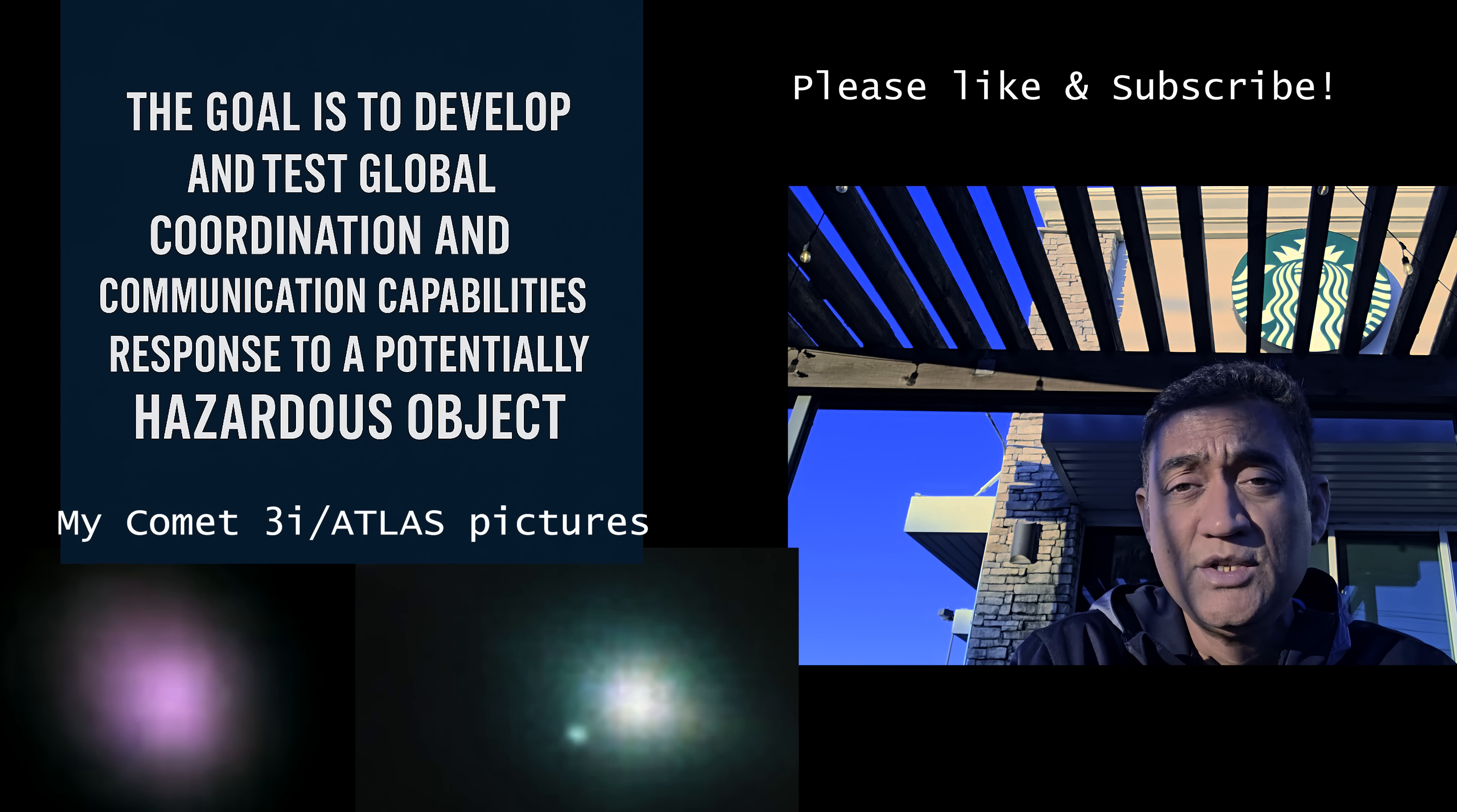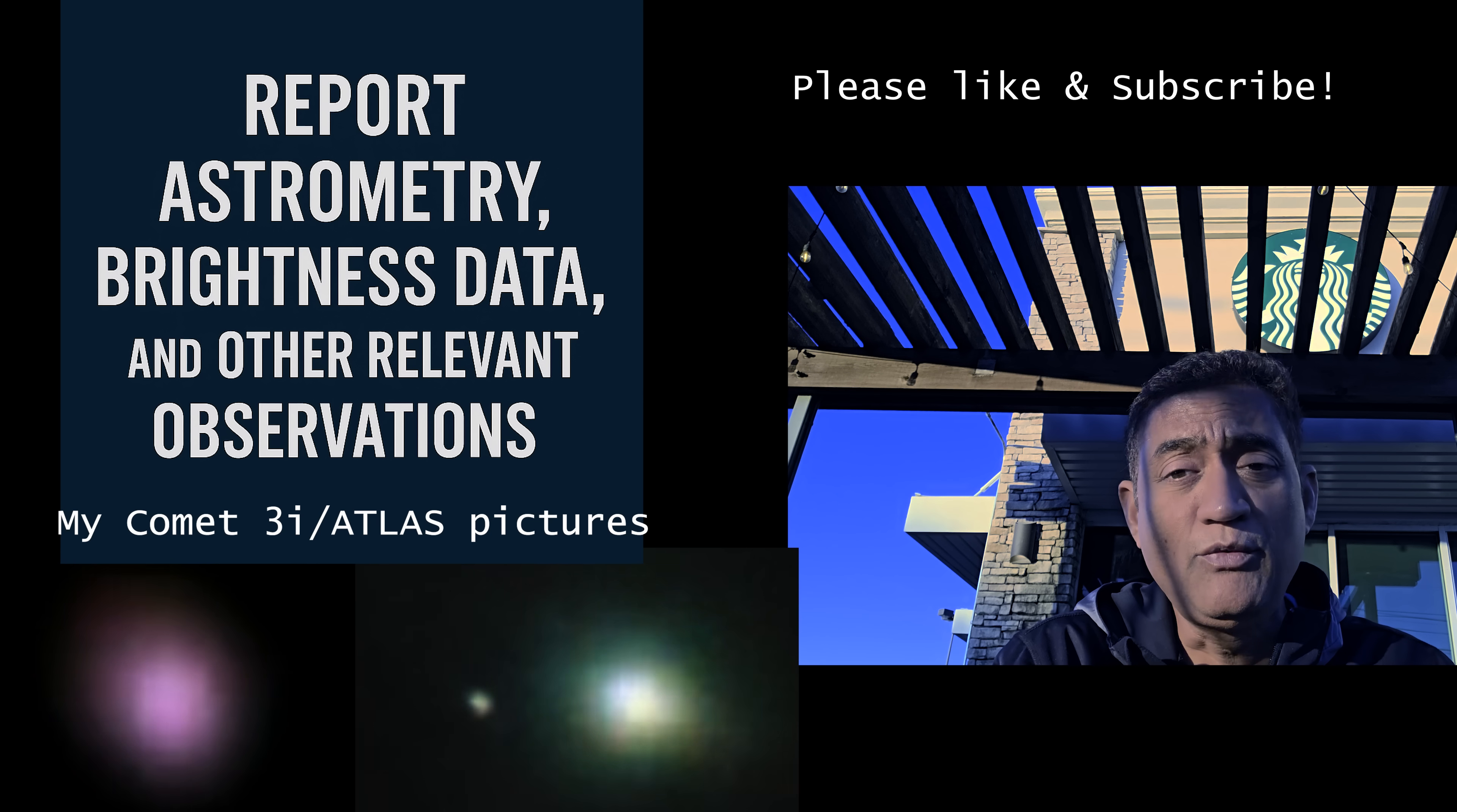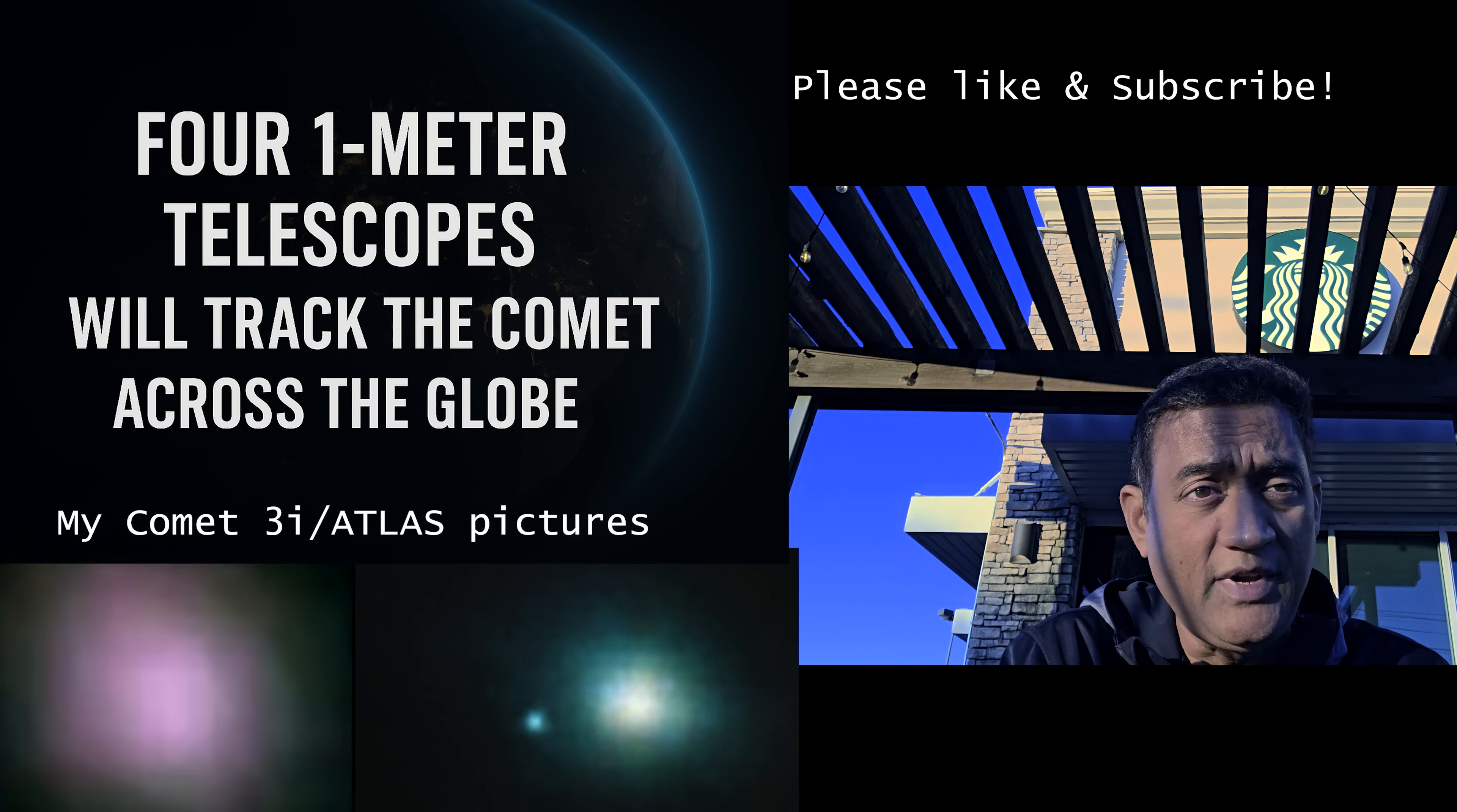Nothing physically is going to the comet. There is no spacecraft, there is no interceptor, there is no probe, there is no flyby, there is no approach mission. It's basically basic observations. So why are they choosing the 3i atlas now? One, it's interstellar, it is going at a super fast speed, it's slightly unpredictable.